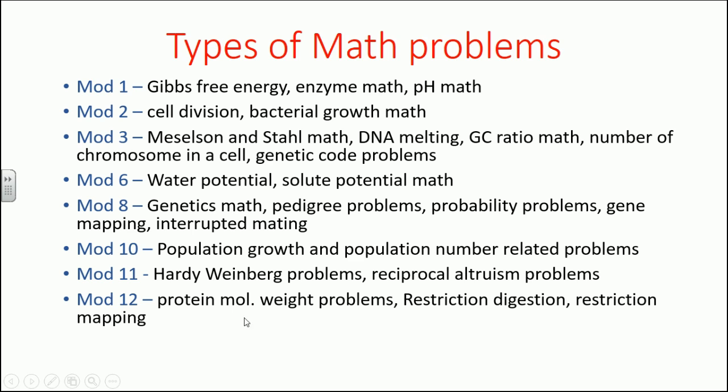Module 12 associated with molecular weight problems, restriction digestion and restriction mapping, which is not exactly part of Module 12 but part of Module 13. Together Module 12 and 13 are known as biological techniques. They can ask questions from protein chemistry, especially molecular weight of proteins, restriction digestion of DNA, and other types of digestion of protein using chymotrypsin and trypsin. You need to know the sequence of amino acids where it cuts, and sometimes gel electrophoresis.